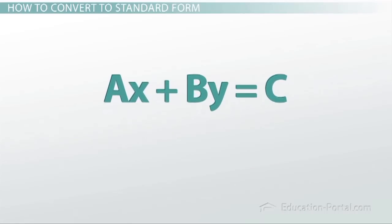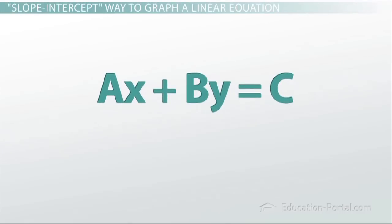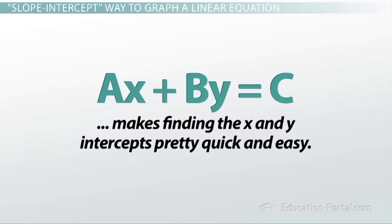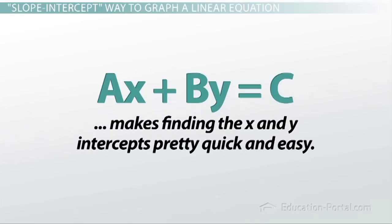What we're going to find out is that the orientation of the variables in standard form makes finding the x and y intercepts pretty quick and easy, which will allow us to use a shortcut when it comes to graphing.